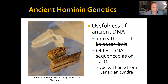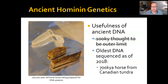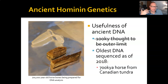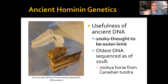How useful is ancient DNA? When I started making these slides about ten years ago, we thought 100,000 years was probably the outer limit, because DNA degrades very quickly—the older it is, the smaller the fragments, making it harder to reassemble correctly. However, in 2018 a team of researchers successfully sequenced the DNA of a 700,000-year-old horse trapped in the Canadian tundra.